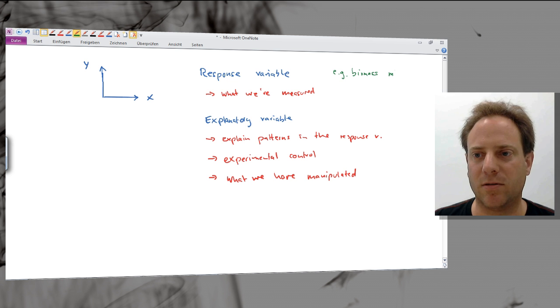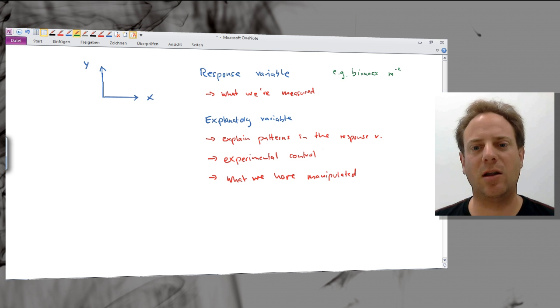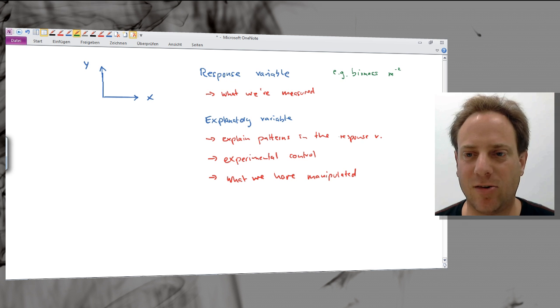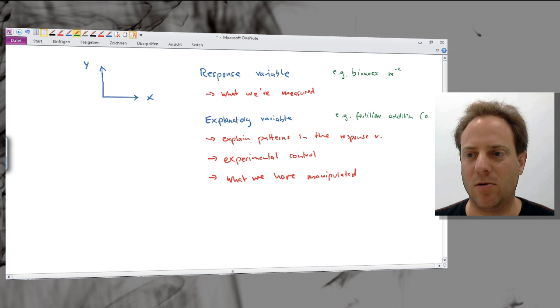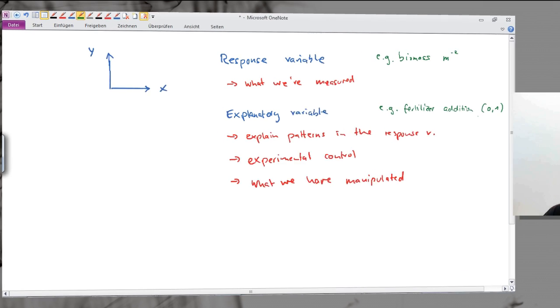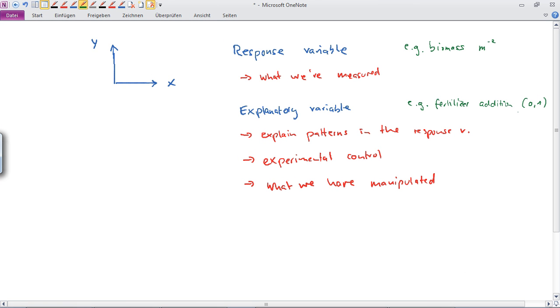Potentially one explanatory variable could be fertilizer addition, and in that case could be, for example, no or yes. So either we fertilized our plants or we didn't.